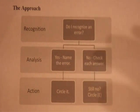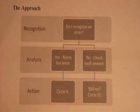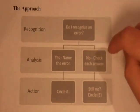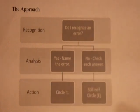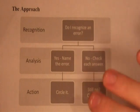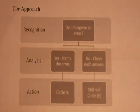The first step is always: do I recognize an error? Do I see something in the sentence that's wrong? If yes, you need to name it — say what kind of error it is. If it just feels wrong but you can't name it, then we treat it as no. If you can name it, you circle it and move on. If it's no, you check the other answer choices one at a time, and if you're still unsure after checking all of them, chances are there's no error.